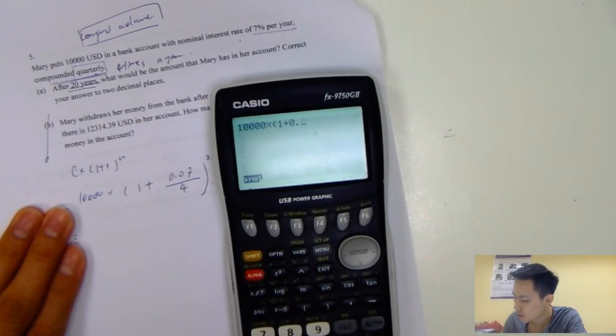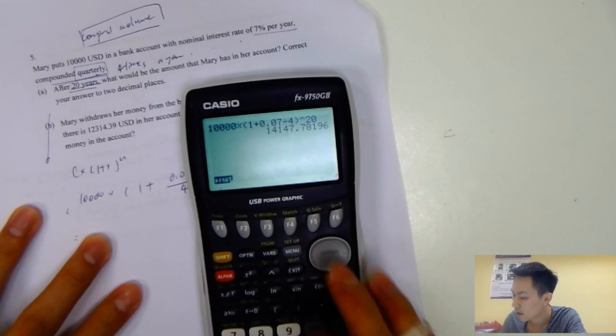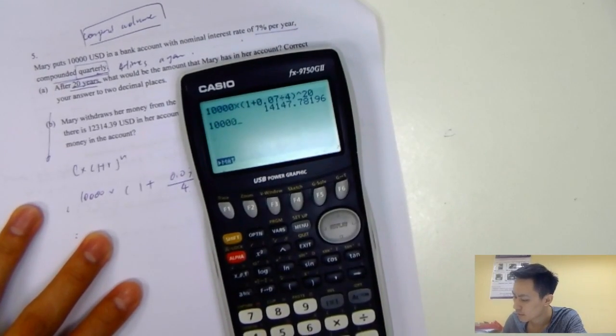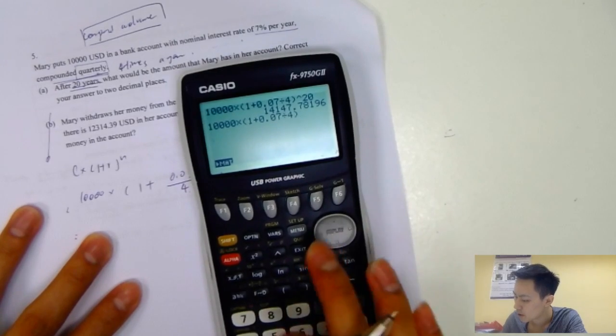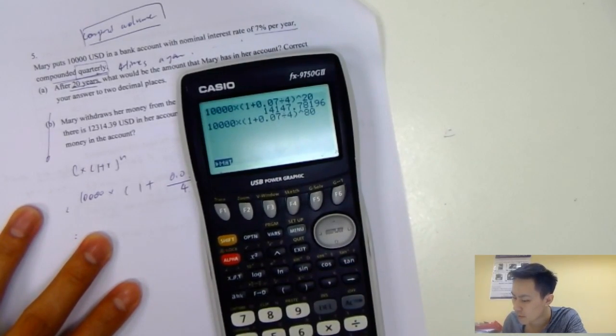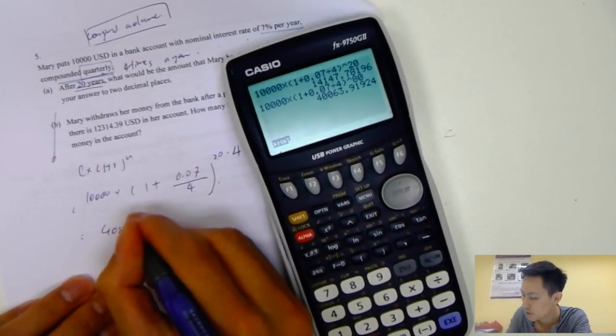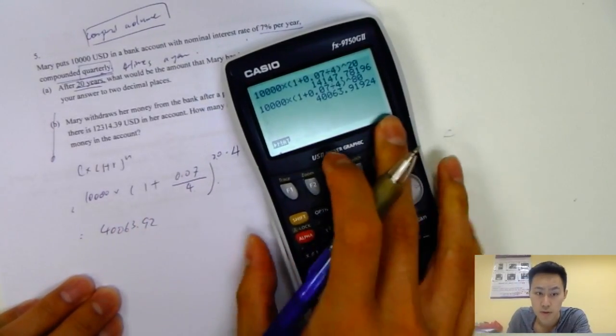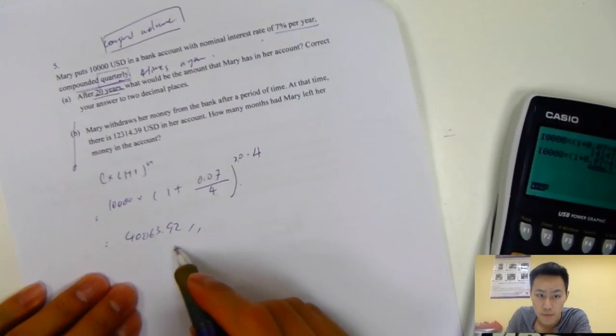Then just go to GDC. Type in the number, 0.07 divided by 4, power of 80. That will be 40,063.92, two decimal places. After 20 years, this amount of money will become this.